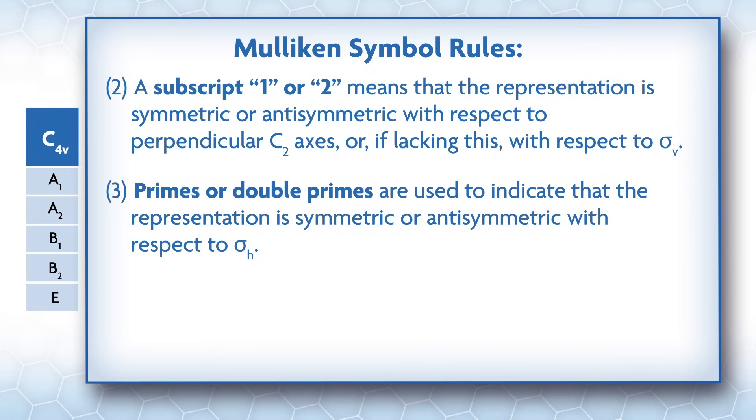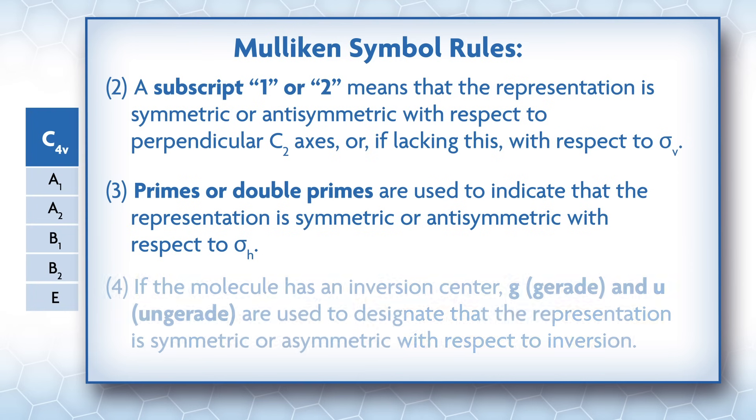Primes or double primes are used to indicate that the representation is symmetric or anti-symmetric with respect to sigma h. If the molecule has an inversion center, g (gerade) and u (ungerade) are used to designate that the representation is symmetric or anti-symmetric with respect to inversion.